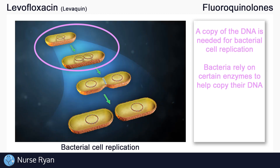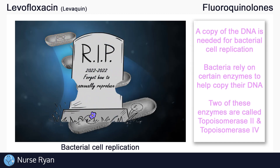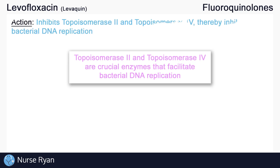Some of these very crucial enzymes are called topoisomerase-2 and topoisomerase-4. Simply put, without these two enzymes, bacterial cells would not be able to replicate, and eventually the bacteria would die off. Topoisomerase-2 and topoisomerase-4 are crucial enzymes that facilitate bacterial DNA replication, and it just so happens that fluoroquinolones work by inhibiting these two enzymes, thereby inhibiting bacterial DNA replication.